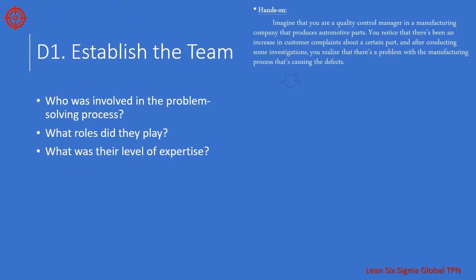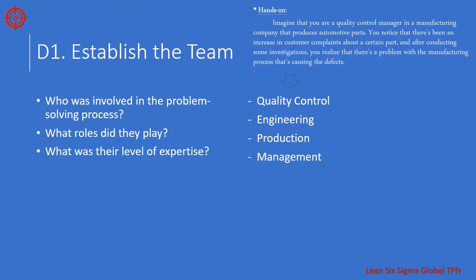The first step in the 8D problem solving process is to establish the team. The team should be made up of individuals who have knowledge and experience in the process being analyzed. This could include individuals from various departments such as quality control, engineering, production, and management. In our example, we bring together a team of experts from quality control, engineering, production, and management to work on the problem.